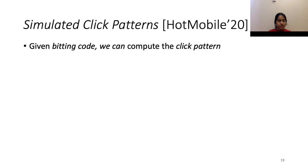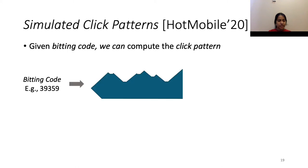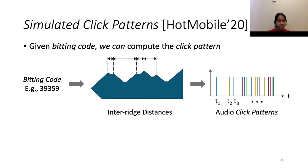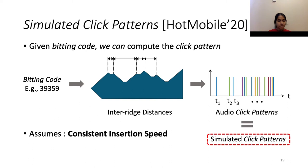Given the bitting code, we can always compute the corresponding click pattern. As an example, given the code 39359, we can construct the exact shape of the key that corresponds to this code, and hence precisely identify the position of ridges that are responsible for production of sound. In this way, we can utilize the distance between ridges to compute the corresponding audio click patterns. In this process, we make one assumption of consistent insertion speed. Due to this idealistic assumption, we also call these audio click patterns simulated click patterns.